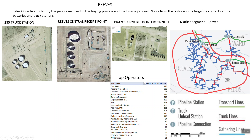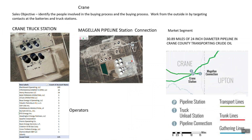Here are the key operators in the area. Our sales objective is to identify the people involved in the buying process and understand that process. The concept is working from the outside in — getting out and talking to these individuals, documenting who they are, and seeing if we can get some sponsorship into the head office to ensure we can get an MSA and start doing lead generation. This process then becomes repeatable.